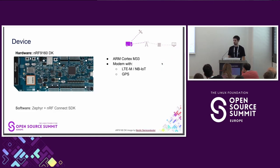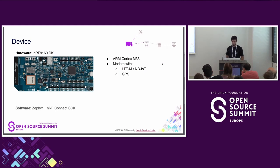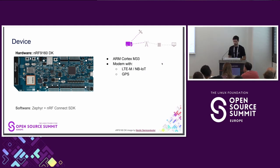Let's start on the device side itself. I picked an NRF9160 DevKit from Nordic Semiconductors for this, mainly because it has good Zephyr support and also contains a modem with LTE-M and NB-IoT connectivity, and also a GPS receiver — which is basically all that we need for an asset tracker. On the software side, I use Zephyr in combination with the NRF Connect SDK for its modem library.